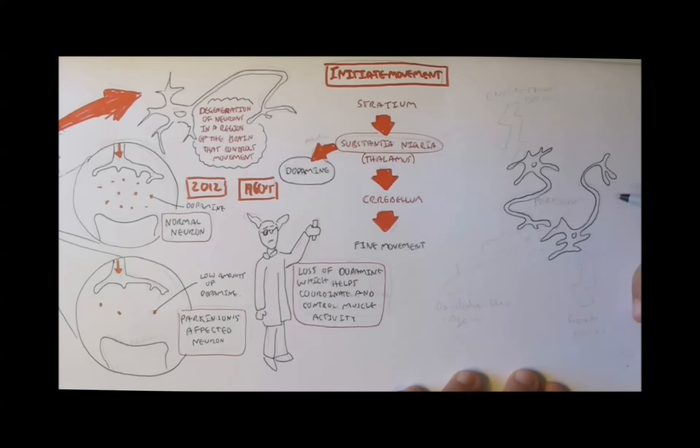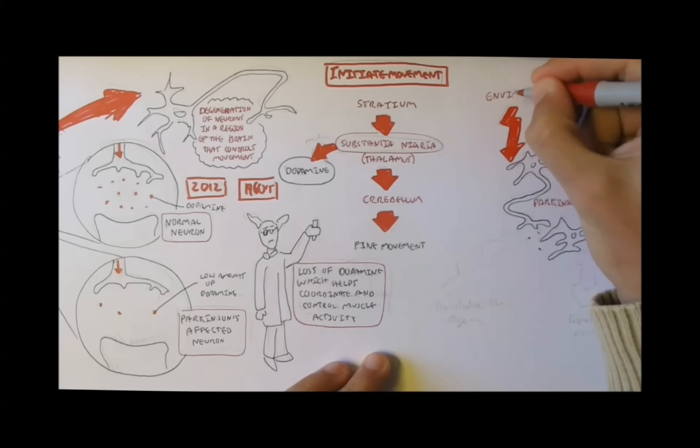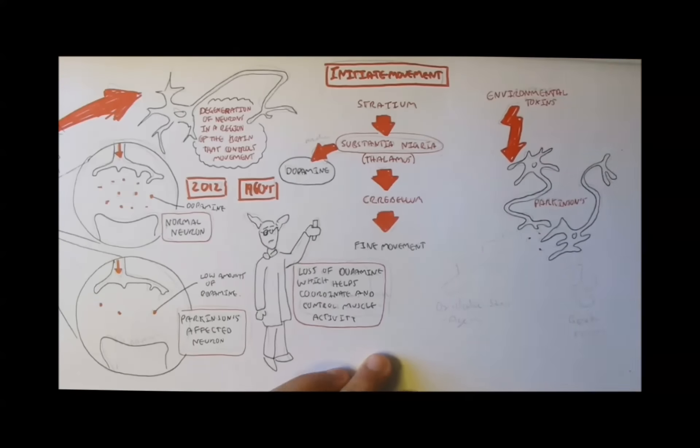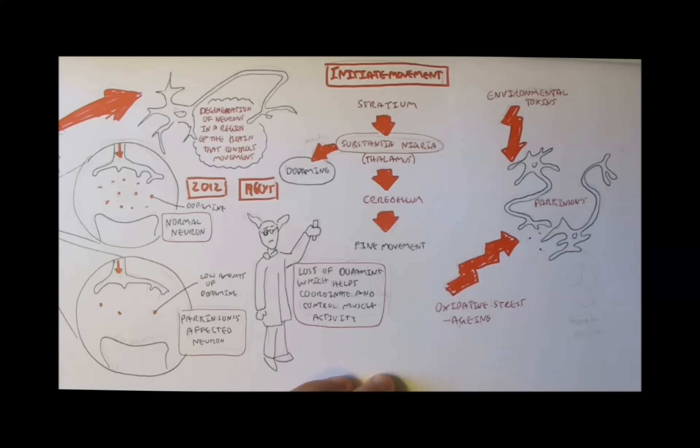The cause of Parkinson's disease is still unknown. The most commonly explored are environmental toxins, such as exposure to metals or chemicals. There's also oxidative stress, which is natural aging, for example. And there are genetic factors associated with PD.